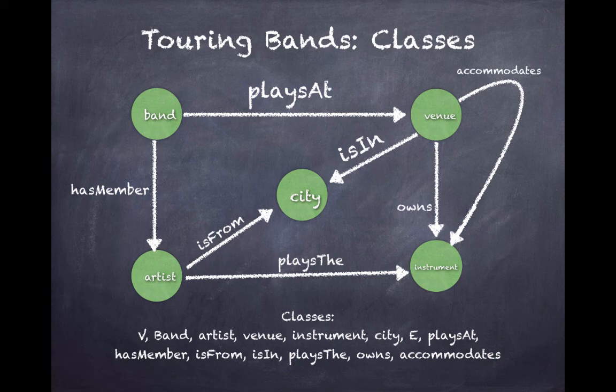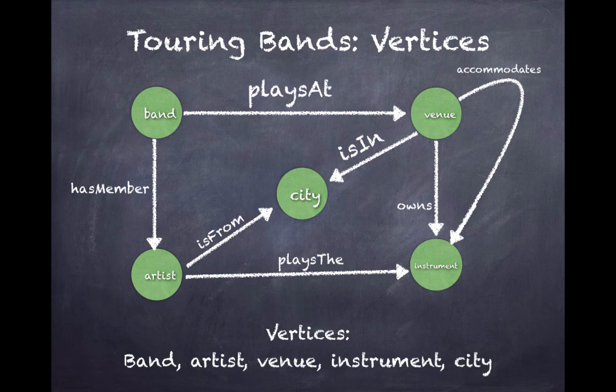It also has two special classes called V and E. Subclasses of V are vertices. These are band, venue, city, artist, and instrument.